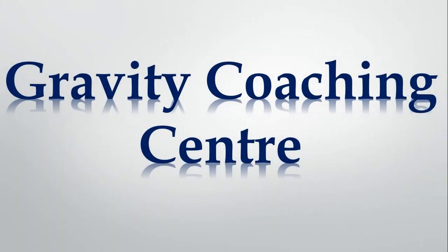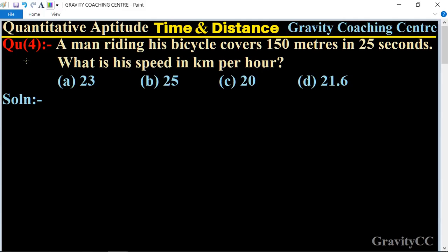Welcome to our channel Gravity Coaching Center. Quantitative Aptitude chapter Time and Distance, question number four. A man riding his bicycle covers 150 meters in 25 seconds. What is his speed in kilometer per hour? Here given the distance is 150 meters and its time is 25 seconds.